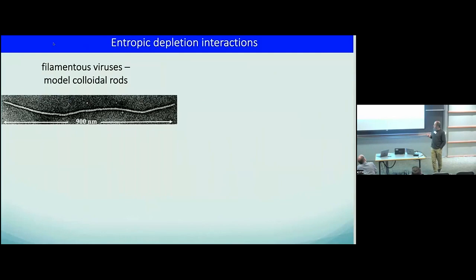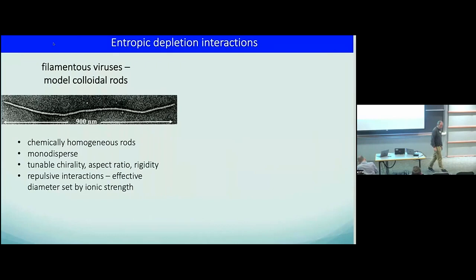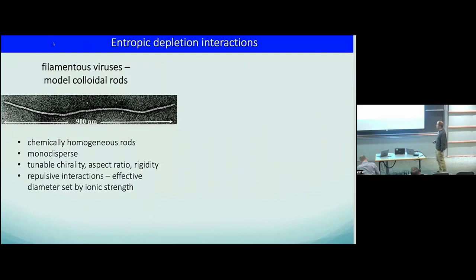So, how do we assemble the sheets? This is our nanoparticle — a rod-like virus about six nanometers in diameter and about one micron in length. These viruses are good particles to study self-assembly: they are chemically homogeneous, monodisperse, and we can engineer their chirality, aspect ratio, and rigidity. And they are charged.